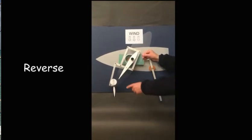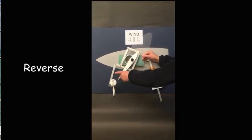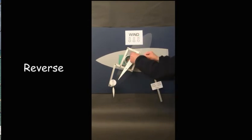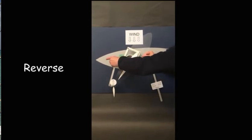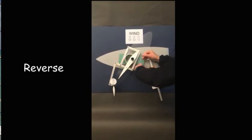The vane here is pointing to the wind, so the wind comes down, hits the sail, goes off that way, and the boat moves into reverse.